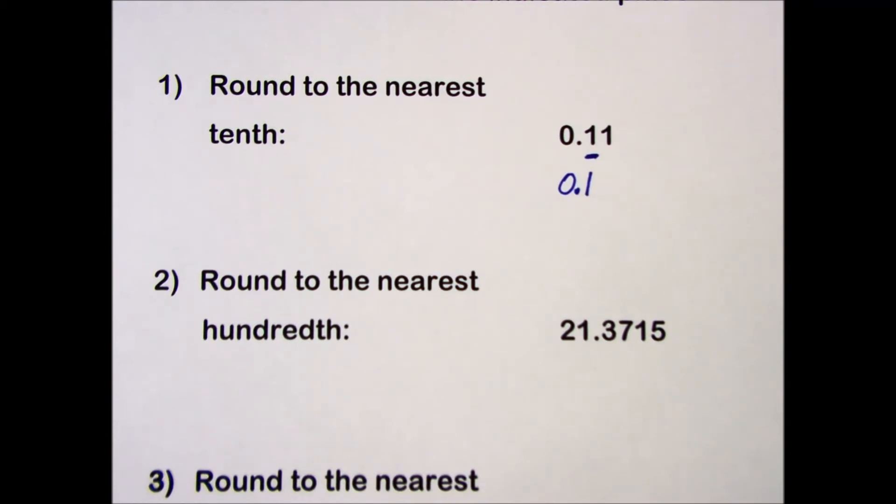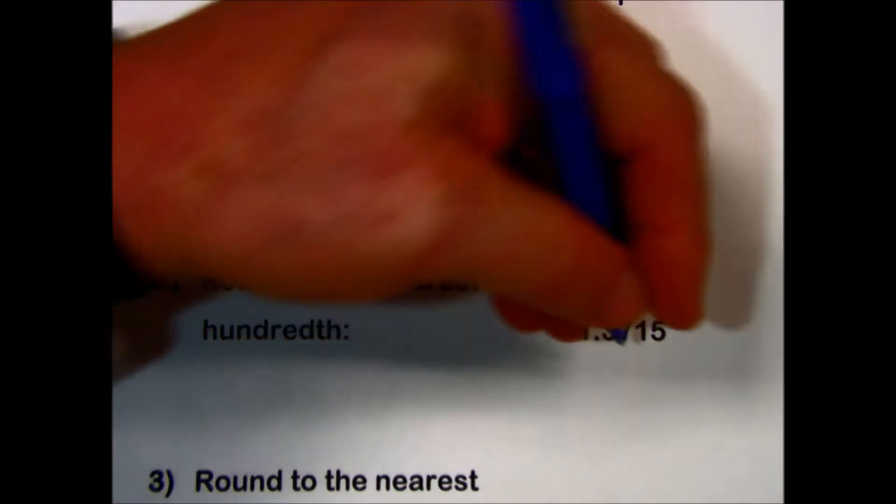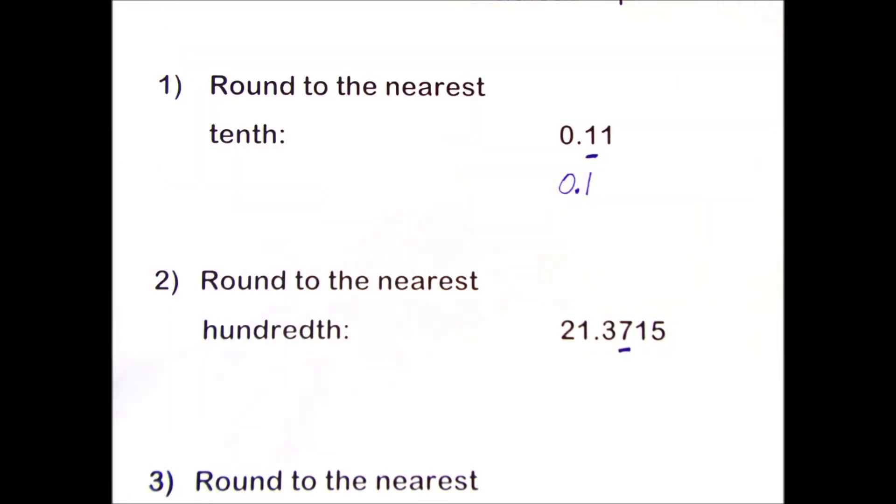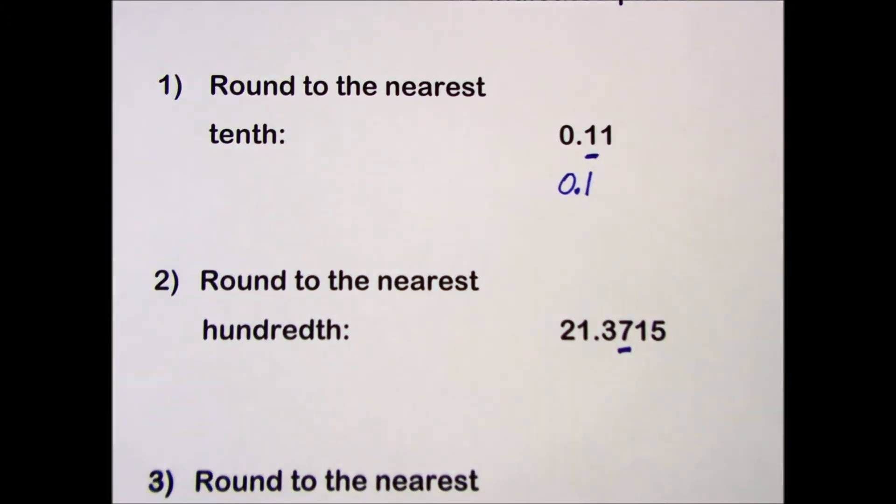The second problem, we are going to round to the nearest hundredth. We underline the place to which the number is rounded, the 7 in the hundredths place. The number to the right of the underlined number again is less than 5, so we leave the 7 alone and discard the numbers to the right of the 7.